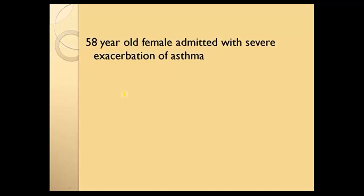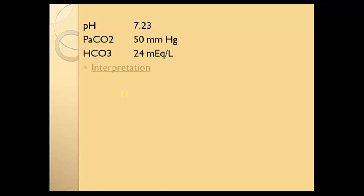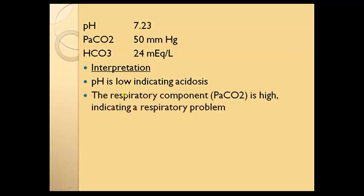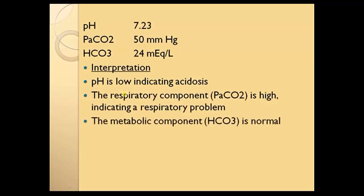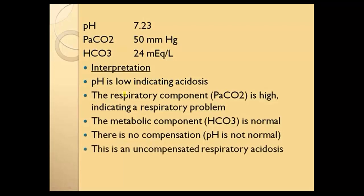Last two — we're going to connect you to some clinical information. We have a 58-year-old female admitted with severe exacerbation of asthma. The pH looks low, indicating an acidosis. The PaCO2 is high, indicating a respiratory problem. The metabolic component is normal. There is no compensation; the pH is not normal. So this is an uncompensated respiratory acidosis. Think about the airway obstruction and the patient's inability to expel CO2 — the acid. They're retaining acids.